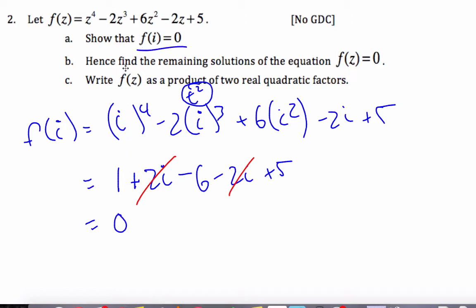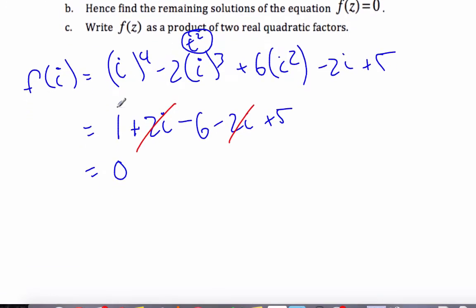Next, it says hence find the remaining solutions of the equation. Well, I know that if z equals i is a solution, then I also know that z equals negative i is a solution.